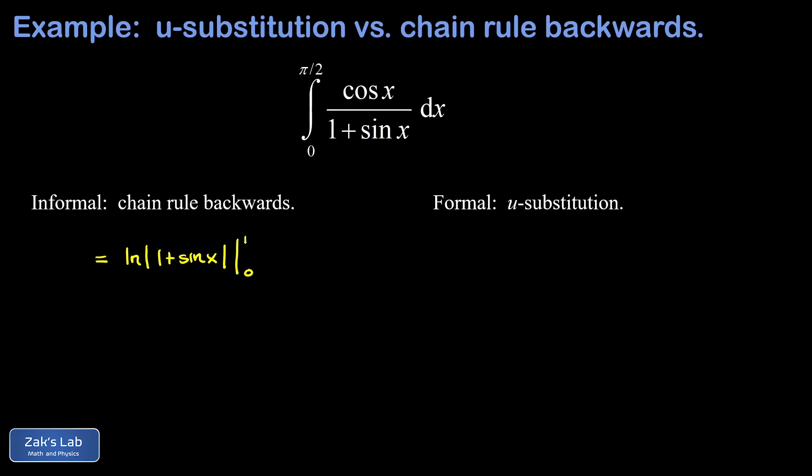Now we evaluate this from 0 to pi over 2. And when I sub in the upper limit, I get natural log of 1 plus 1 because the sine of pi over 2 is just 1. So that's the natural log of 2. Note that we don't need the absolute value bars there because 2 is positive.